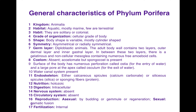They have either calcareous spicules, siliceous spicules, or spongin fibers. They are holozoic in nutrition and their digestion is intracellular. The nervous system is absent and the circulatory system is also absent. They reproduce asexually by budding, gemmule, or regeneration, and sexually by gametic fusion. Their fertilization is internal.